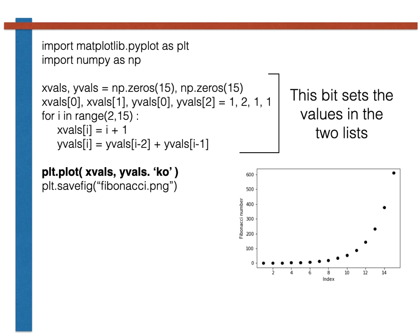There then follows a loop to set the other elements of xvals and yvals. This loop differs from the loops you have written previously, as by writing range(2, 15) in place of range(15), we ensure that i equals 2 on the first pass through the loop, i equals 3 on the second pass, i equals 4 on the third pass and so on. In the first pass through the loop, we thus set xvals[2] to 3, the second pass sets xvals[3] equal to 4 and so on. yvals[i], meanwhile, is set equal to the sum of yvals[i-2] and yvals[i-1], as that is how we calculate the terms in the Fibonacci sequence.